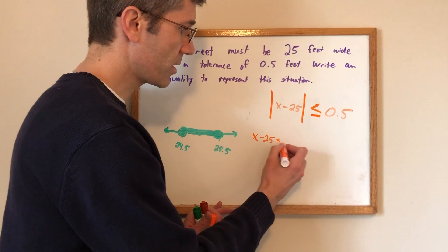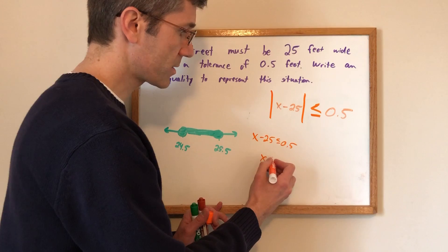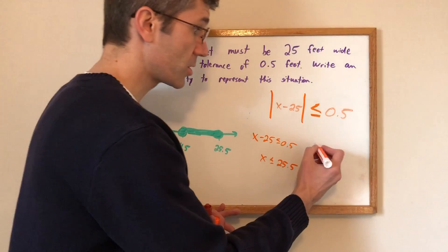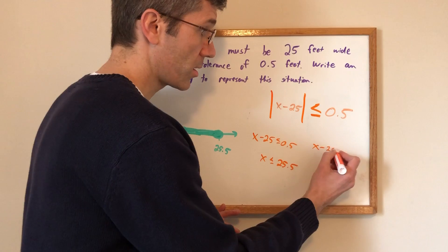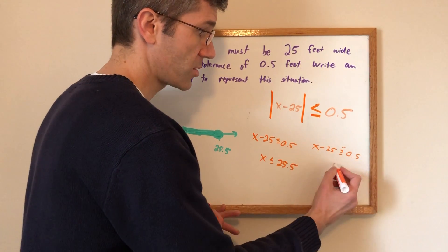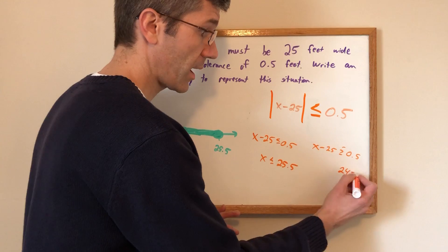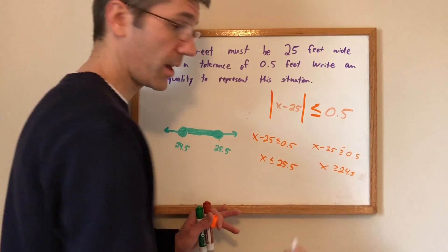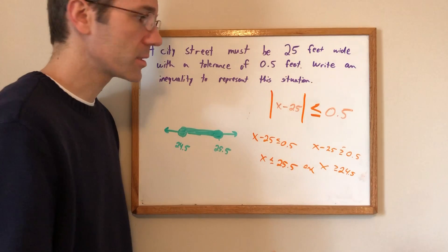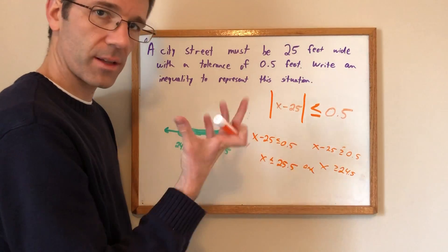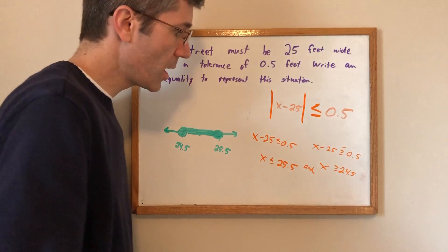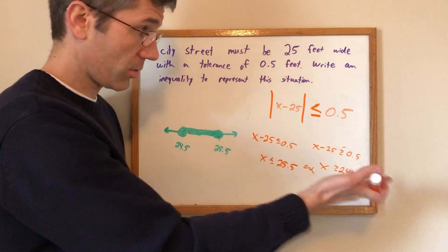X minus 25 less than or equal to 0.5. X less than or equal to 25.5. So far so good. Drop the bars. Flip the symbol. Change that sign. Add 25. That's going to give me 24 and a half. X is greater than or equal to that and we're going to have an and in there because it's less than which is and. And also because I knew it was a tolerance meaning it's going to be accepted within a certain range.